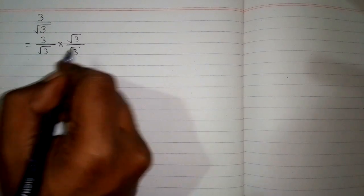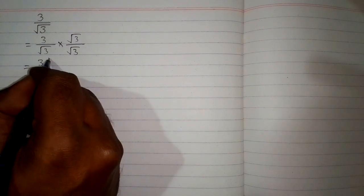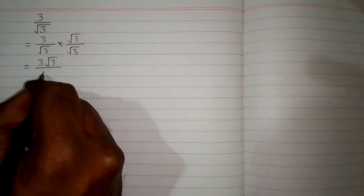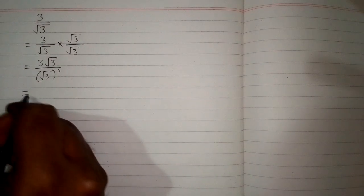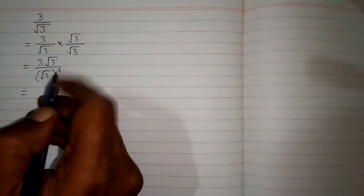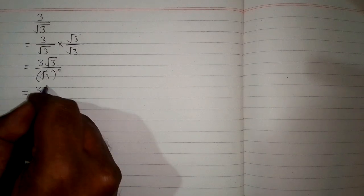We multiply 3 by square root of 3 to get 3 times square root of 3 in the numerator. Square root of 3 multiplied by square root of 3 is equal to the square of square root of 3. We can cancel this square root and this square, giving us 3 square root of 3 upon 3.